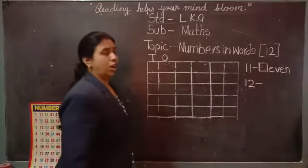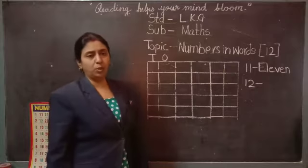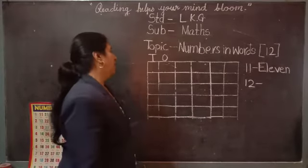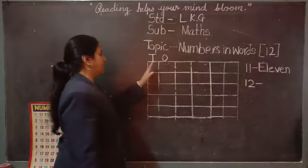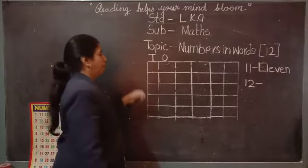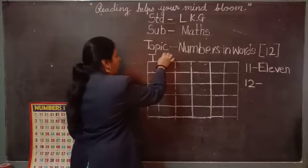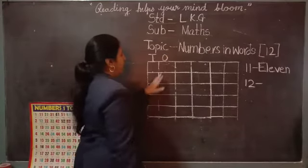So all of you, open your square notebook. Very good. Look here from margin, this is your first square. You have to write T on one square and O on another square. O means ones.